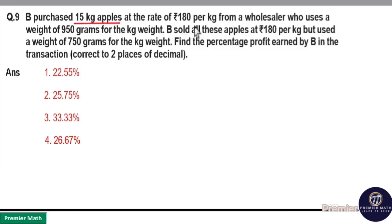B purchased 15 kilogram apples at the rate of 190 per kilogram from a wholesaler who uses a weight of 950 grams for the kilogram weight. B sold all these apples at 180 per kilogram but used a weight of 750 grams for the kilogram weight. Find the percentage of profit earned by B in the transaction.